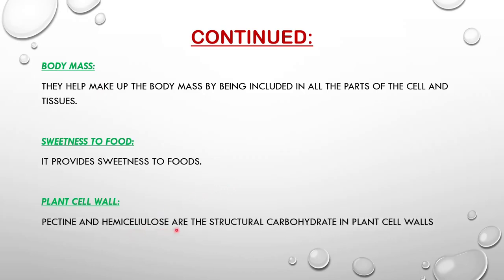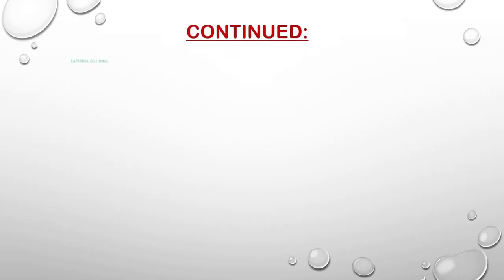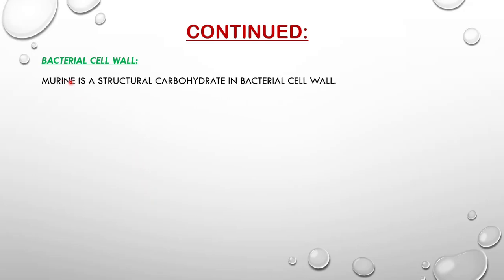Pectin and hemicellulose are structural components found in the plant cell wall, so carbohydrates are not only concerned with humans but also with plants. Furthermore, murein, a structural part of the bacterial cell wall, is a carbohydrate in nature - that is also another important biological importance of carbohydrates.